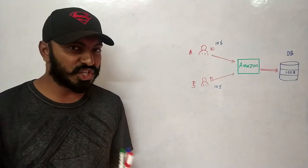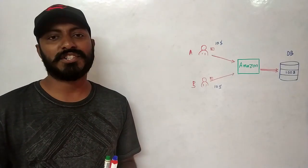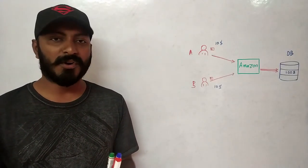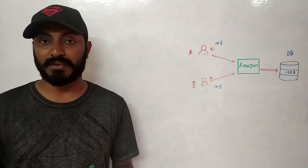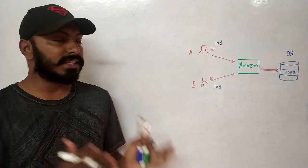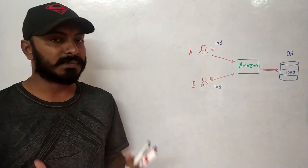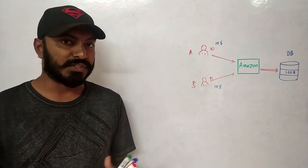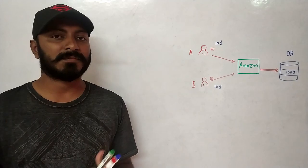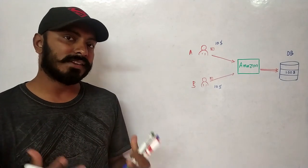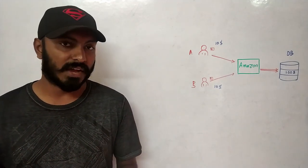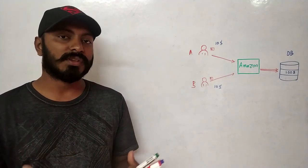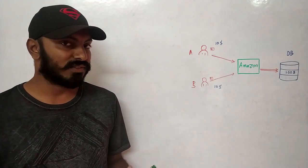I'm pretty sure you guys know about transactions and how they exactly work. The examples in this video are used to make the concept stronger and to understand what are the different types of locks available to support transactions.